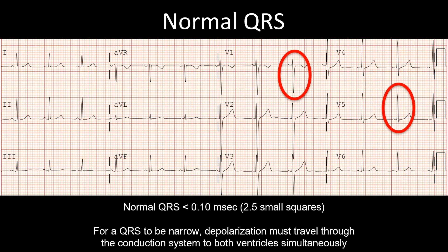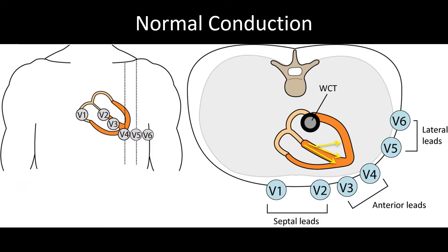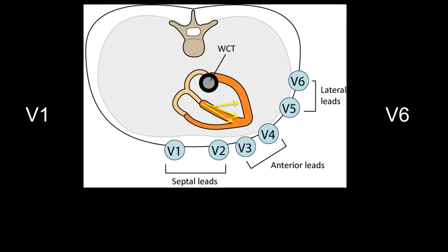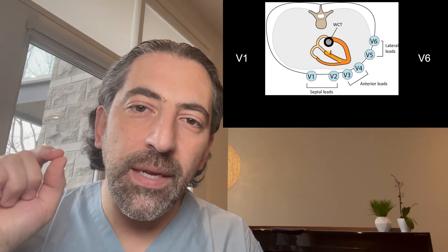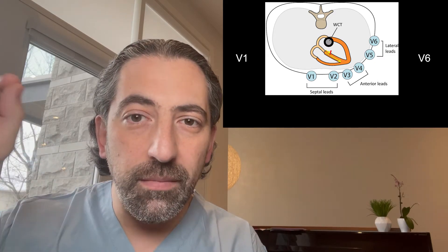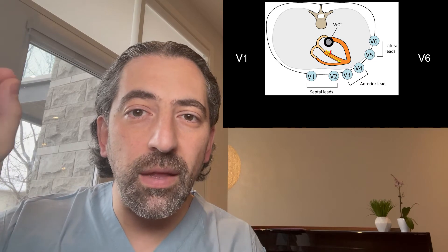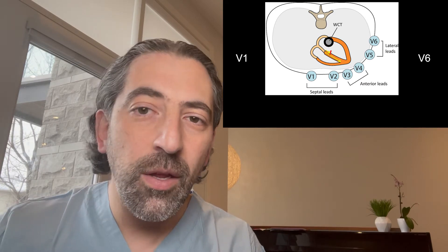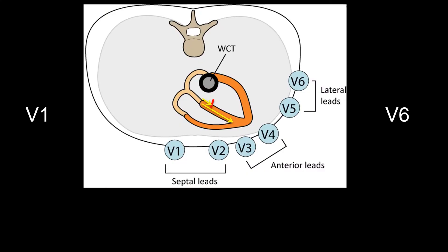Under normal circumstances, both the right bundles and the left bundles depolarize simultaneously. However, in the setting of left bundle branch block, for whatever reason, the signal is interrupted in the left bundle and depolarization proceeds down the right bundle. The first thing that happens is the normal depolarization of the septum from left to right because of Purkinje fibers inserting to the left side of the septum from the left bundle no longer takes place, and now the septum will depolarize right to left.